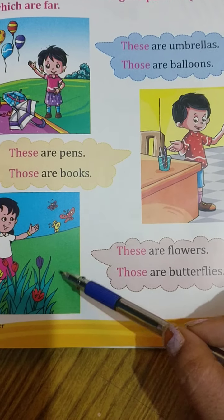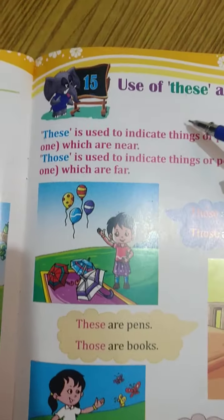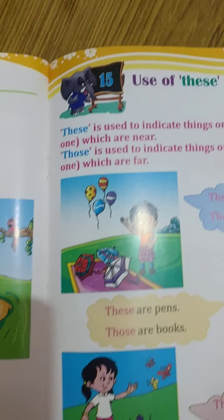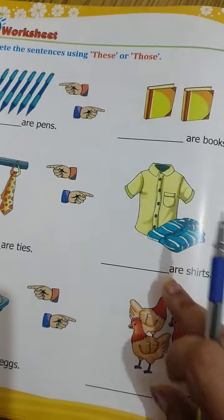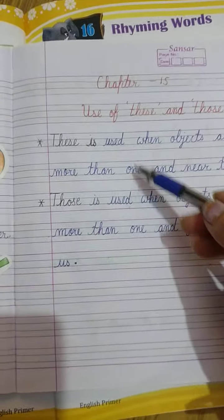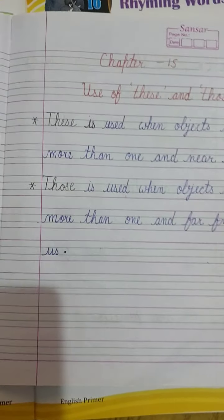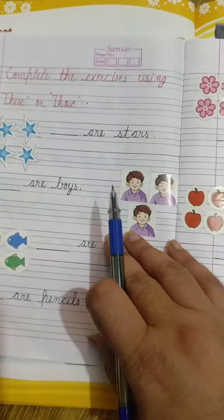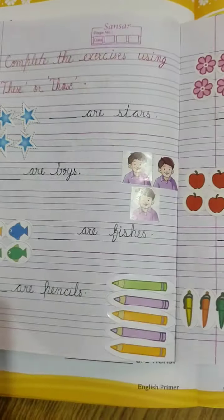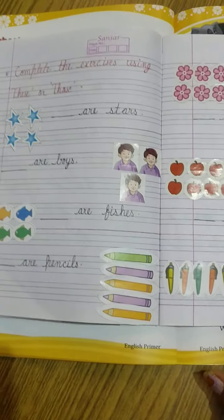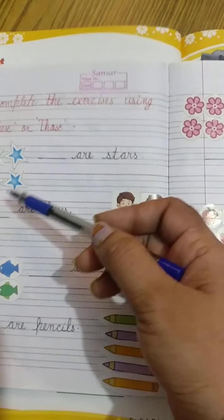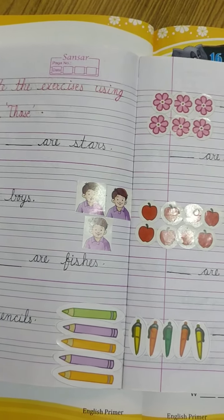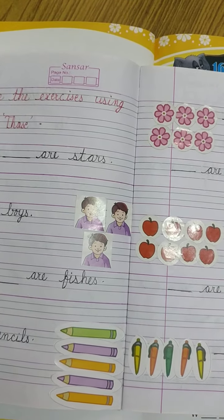This, that, these, those — all are almost the same; the only difference is singular and plural. Now complete this exercise yourself. Write down the two rules in your copy — when you write it, you will automatically remember it. Write it in good handwriting. Complete these two exercises, only two pages. You can use stickers from the market, draw pictures, or simply write the answers as numbered sentences.